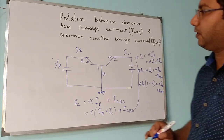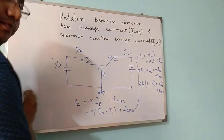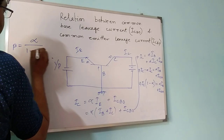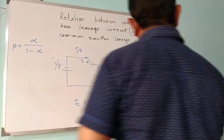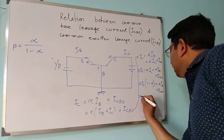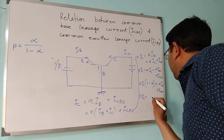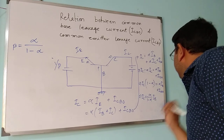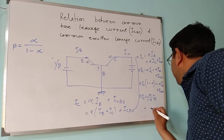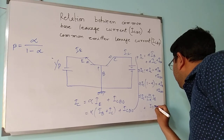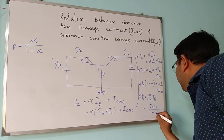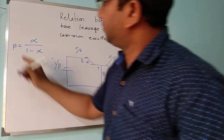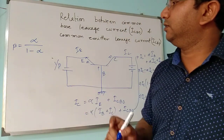Now, the relation between α and β: β equals to α divided by (1 minus α). Simplifying, IC equals to α/(1 minus α) times IB, plus ICBO/(1 minus α).